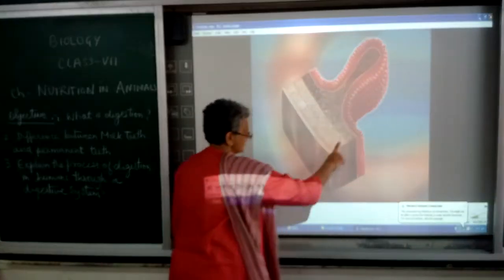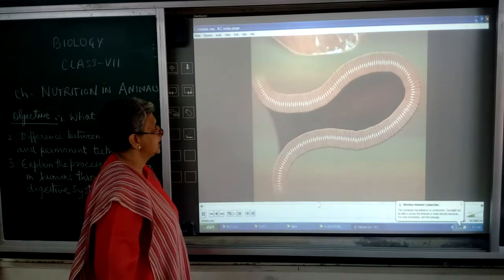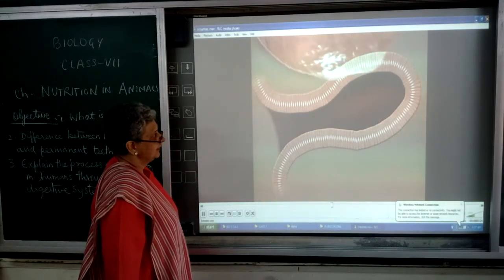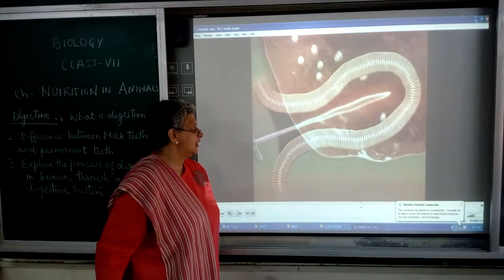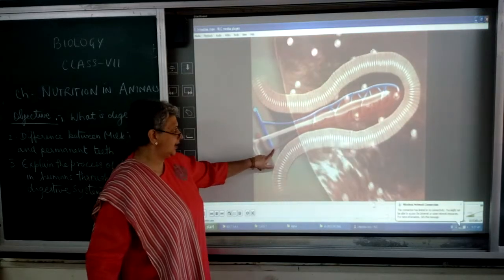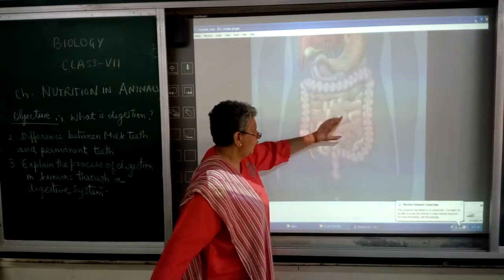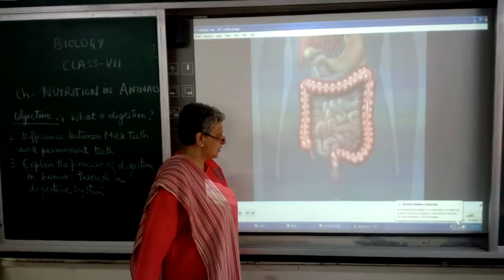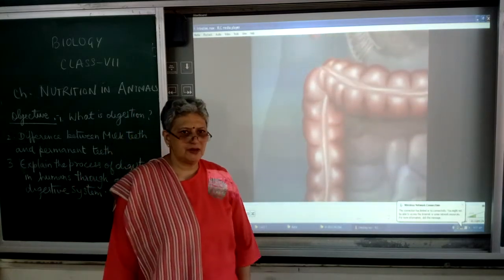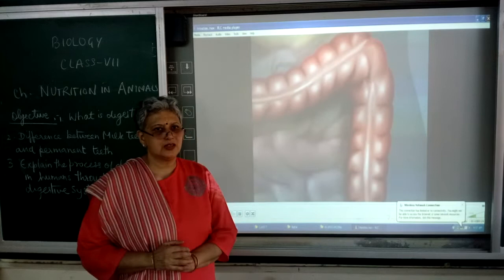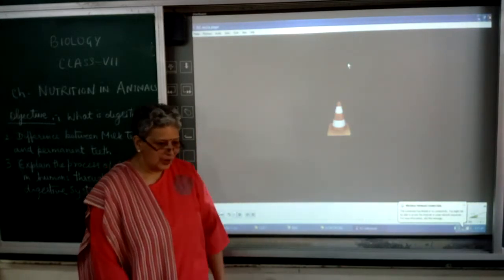This is what the finger-like projection looks like. This is how the small intestine is designed so that maximum absorption of food takes place. The food comes in here, absorption takes place, and all the unabsorbed food goes to the large intestine. This unwanted food is stored there and whenever it is not removed from the body it creates problems, so it must be expelled.